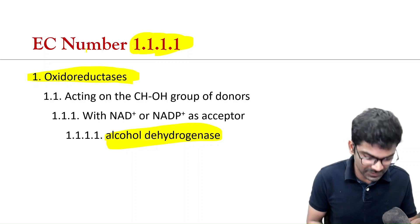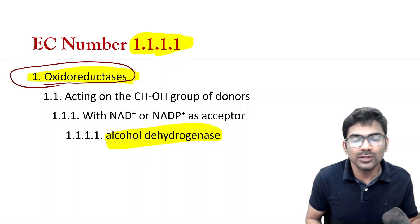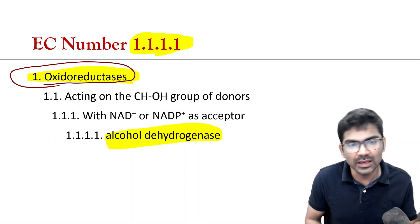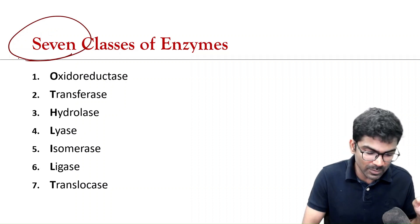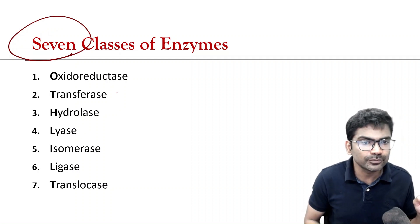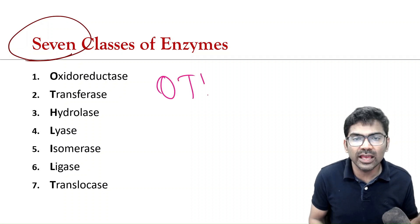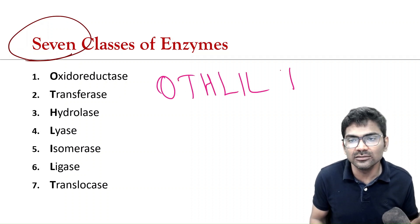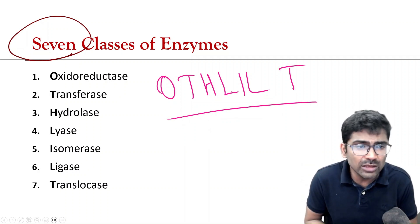So, EC1, we have seen that it is oxidoreductase. So, this is one of the classes of enzymes. There are seven enzyme classes. So, what are they? It is very easy to remember O-T-H-L-I-L-T. O-T-H-L-I-L-T. So, this is the mnemonic for remembering the seven classes of enzymes.